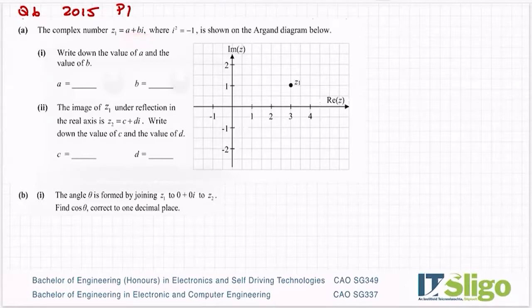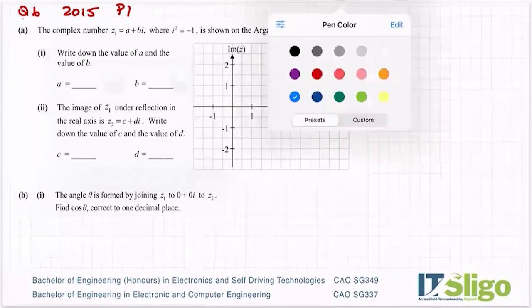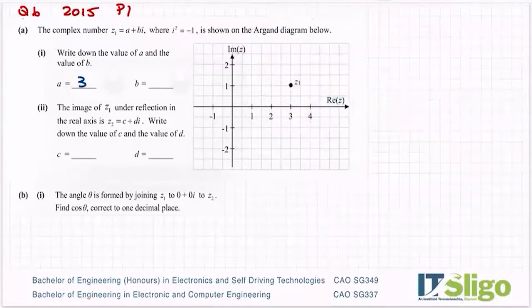So a plus bi - a is the real part, b is the imaginary part. So across to a on the real axis I can see a is 3, and then we went up to 1 on the imaginary axis so b is 1. Be careful you don't write down 1i or i for this because a and b are what we call the coefficients. They're the values and the i just denotes that that's the b component of the number. So z1 is equal to 3 plus 1i.